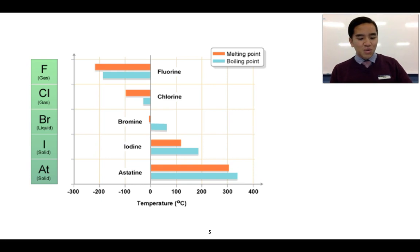In a similar case, we've got another class of molecules. In this case, we've got diatomic molecules of group 7. So we've got fluorine, which exists as F2, chlorine as Cl2, bromine as Br2, and so on.